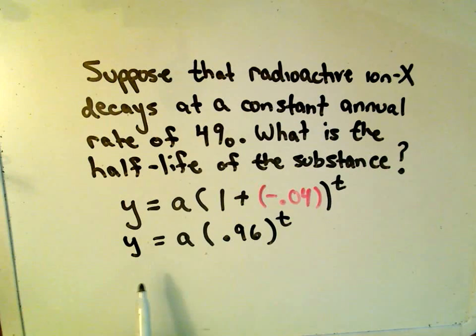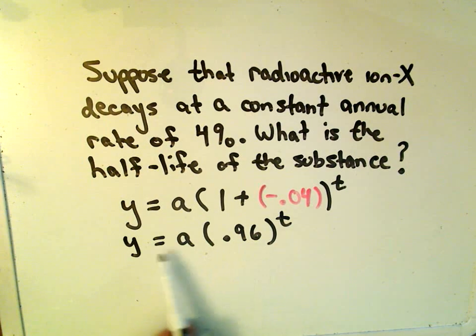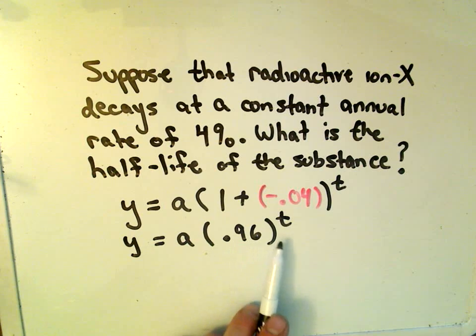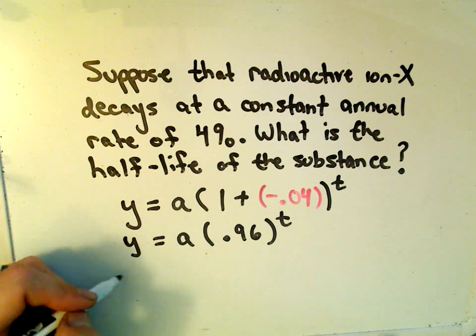So basically, this formula is going to tell us the amount of the substance that remains after t years, since it has an annual rate. So we want to know the half-life.